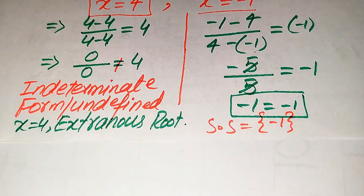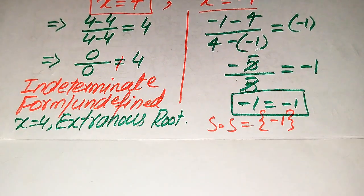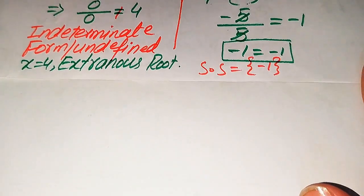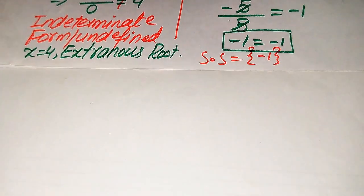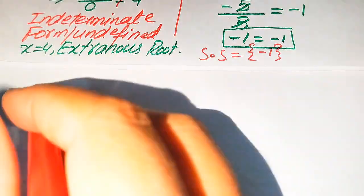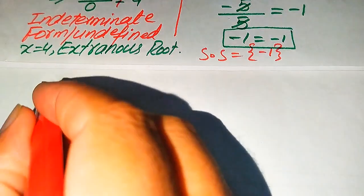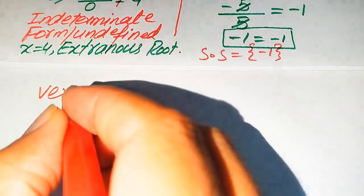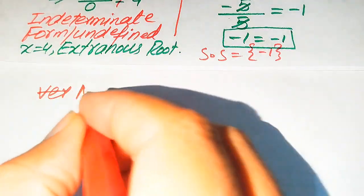This is the final solution set from the first method. Now we solve the same problem using the second method, so we copy down the given question statement again.